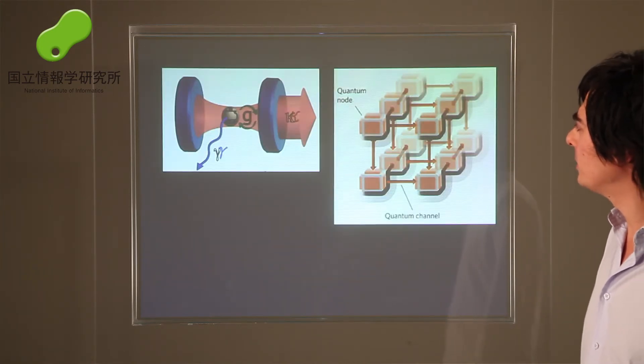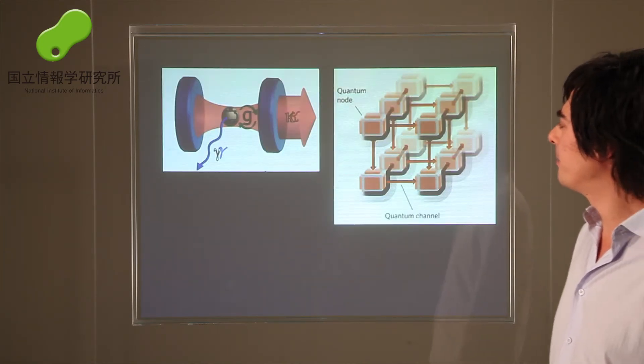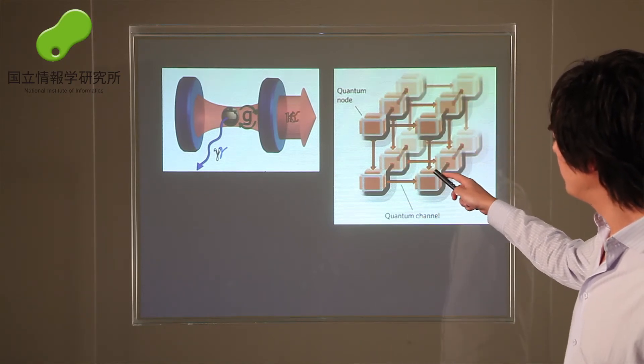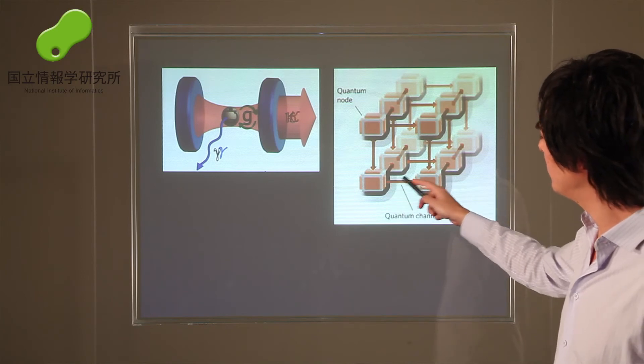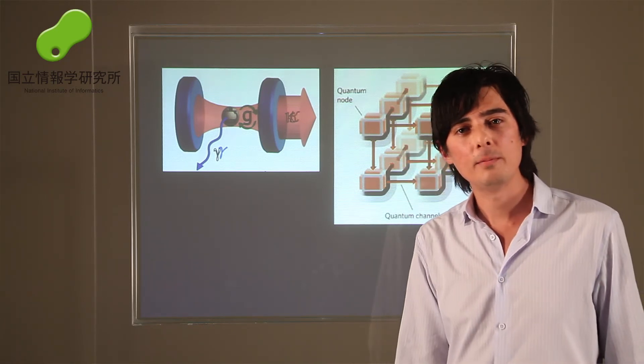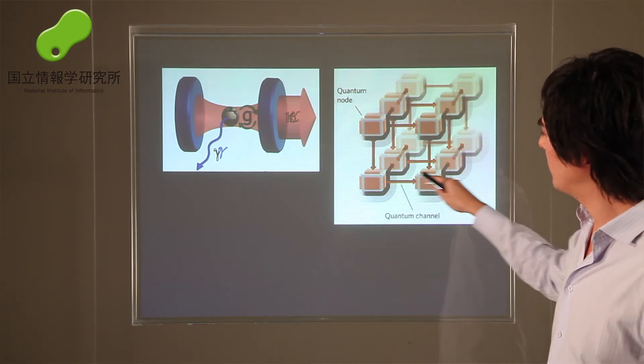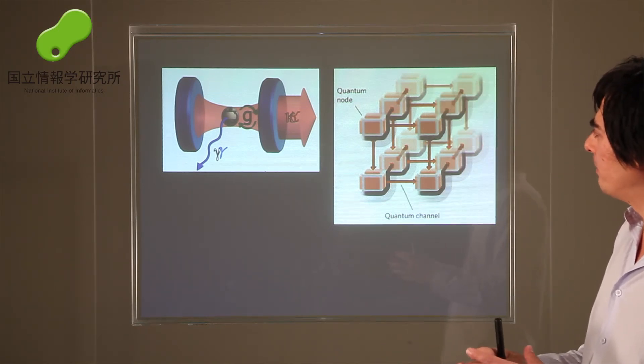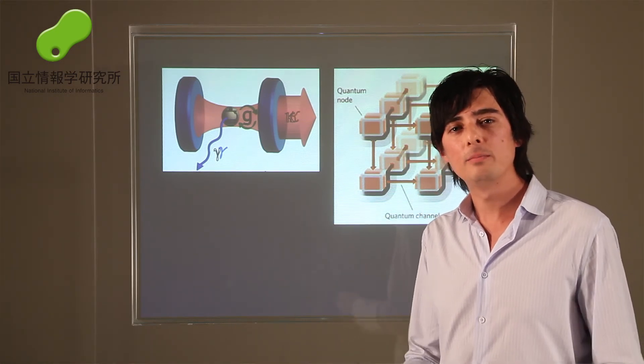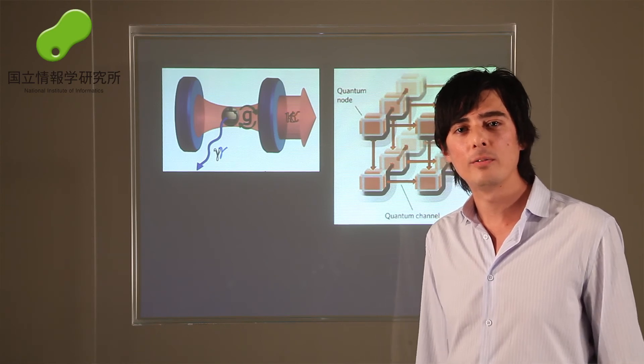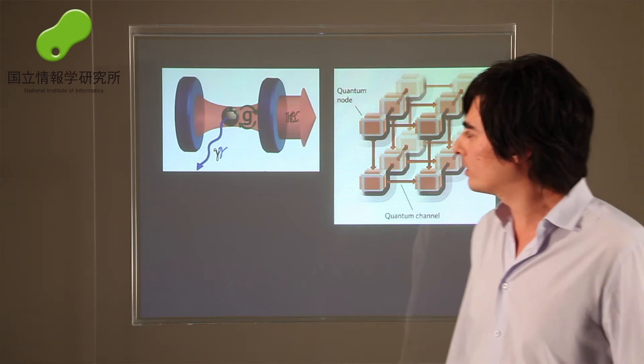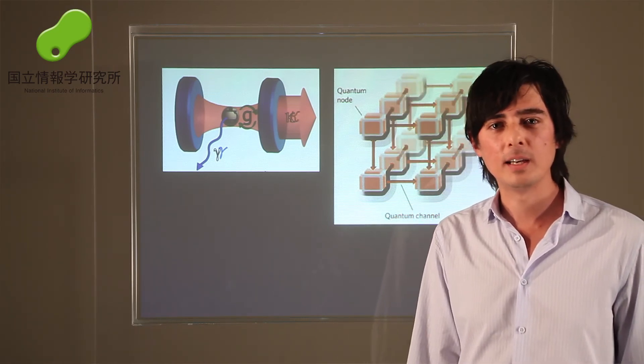Other applications include things like a quantum network. In this case, you would have these Bose-Einstein condensates sitting on each of these nodes, and these will be connected by optical fiber. Once you have these connections, basically this whole system becomes a quantum mechanical object. You can make things like the analog of quantum internet, for example. These are some of the ideas we're thinking about at NII.